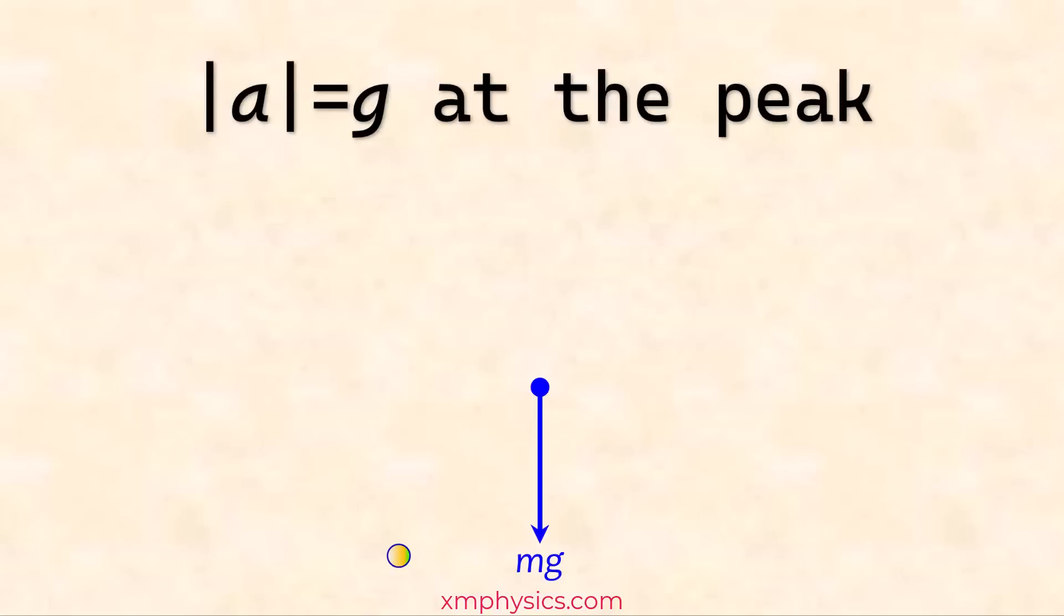And what about when the ball is at the peak? You know there's always something special at the peak. So at the peak, the ball is stationary. So if you're stationary, there's no air resistance and the net force will be just mg and the acceleration should be exactly equal to 9.81 m/s² when you're at the top.